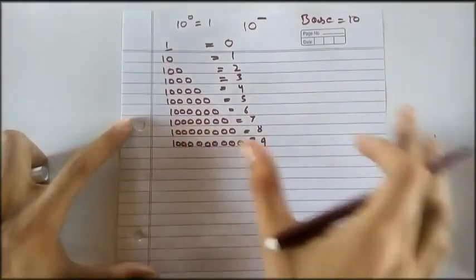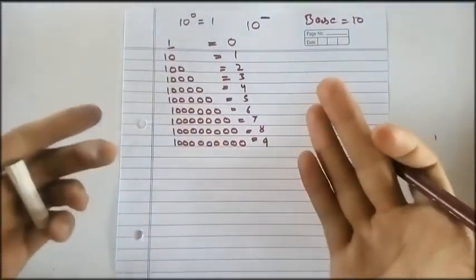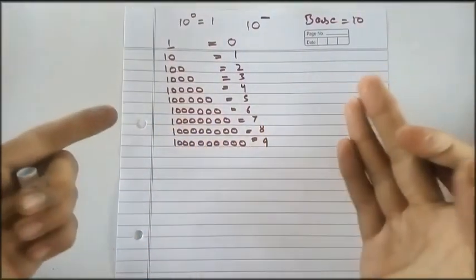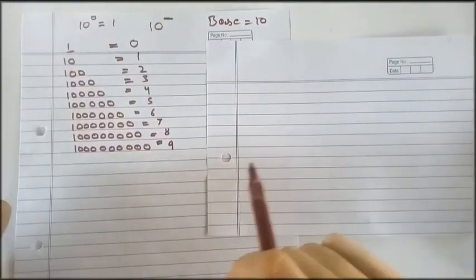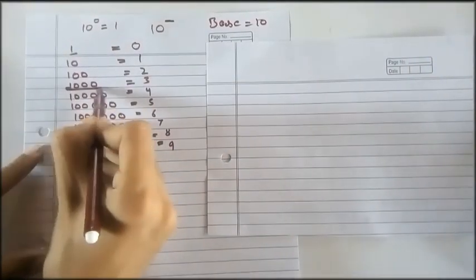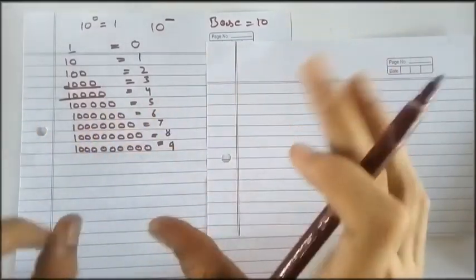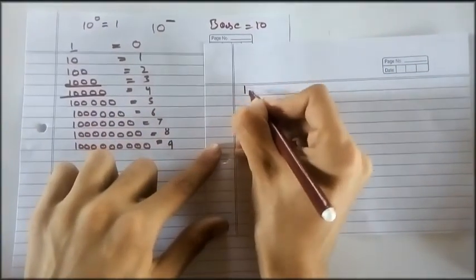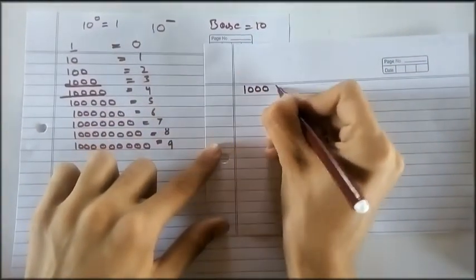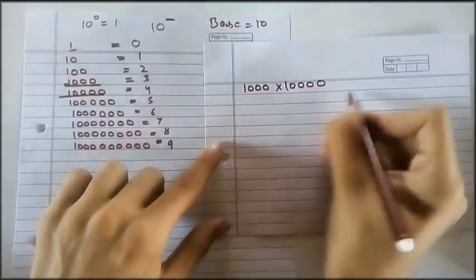Now we have our own logarithm table. Now let's see if we can use it or not. So to test our logarithm table, let's multiply this and this using logarithm. So 1,000 multiply by 10,000.